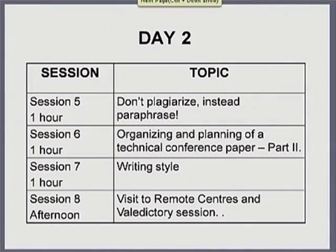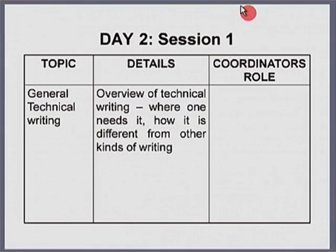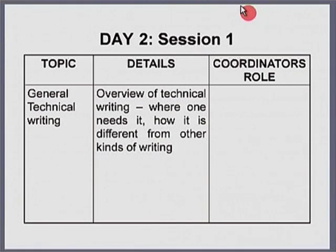Let us go through these sessions one by one. Session 1 is an overview of technical writing — how technical writing is different from other kinds of writing and where one needs it. One workshop coordinator mentioned that you require technical writing in PhD theses, reports, and papers. We will look at the different places where technical writing skills are required and how each is similar and what the minor differences are. This will be a short overview.